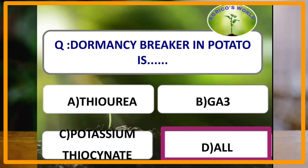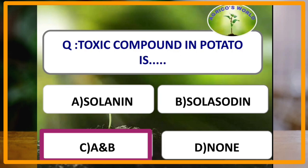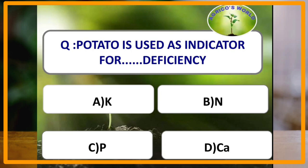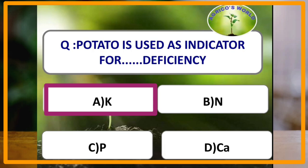Toxic compounds in potato are solanin and solosodin. These toxic compounds are produced when potato seeds are exposed to sunlight directly. Potato is used as an indicator for potassium deficiency, because potato is very sensitive to potassium deficiency.